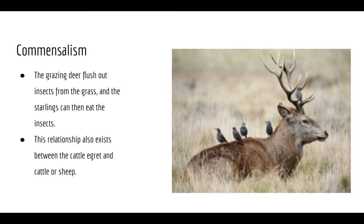With commensalism, grazing deer flush out insects from the grass, and starlings — the birds in the picture — eat those insects. Deer can attract insects and flies, and starlings fly near the deer to eat them up. The deer is not affected and doesn't truly gain a benefit — it's just hanging out. The starlings grab whatever they can by being near the deer. That's all for today; I'll attach a Google Form with further directions.